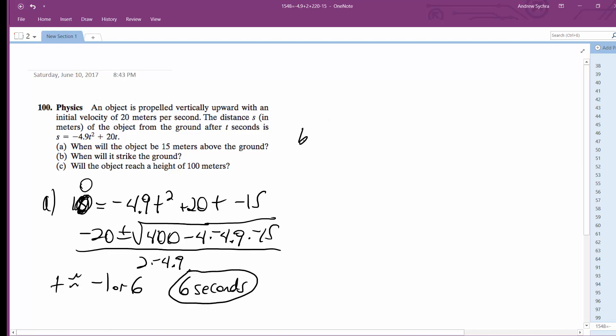Part B: When will it strike the ground? We just set this equal to zero. So negative 4.9 T squared plus 20 T equals zero. Factor out T: negative 4.9 T plus 20 equals zero.